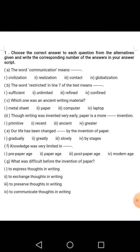Number A: The word 'communication' means. Options are: Civilization, Realization, Contact, Globalization. The answer will be Option number 3, Contact. Number B: The word 'restricted' in line 7 of the text means. Options are: Sufficient, Unlimited, Refined, Confined. The answer will be Option number 4, Confined.